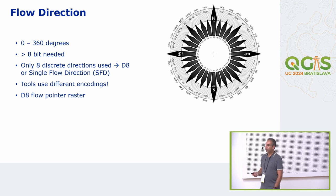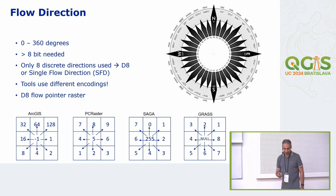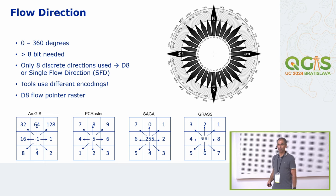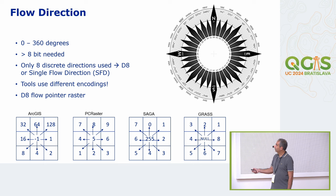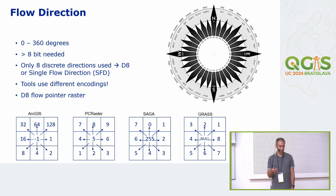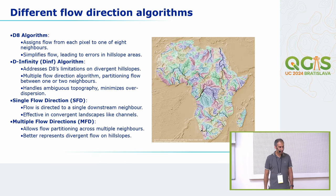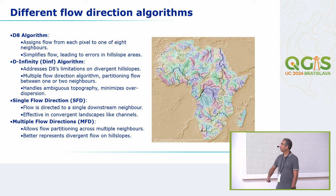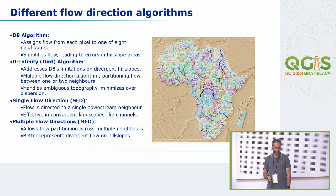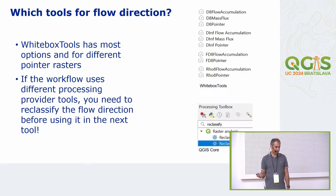PC Raster uses the numeric pad — so you always have the legend of the flow direction on your computer keyboard, where 8 is the arrow to the north, etc. There are other flow direction algorithms, but in science we always start with the simplest one and see if it gives good results before going to more advanced ones. Whitebox Tools offers the most options for these different pointer rasters and flow directions. If you started your process with GRASS and want to continue with Whitebox Tools, you often need to reclassify the flow direction.